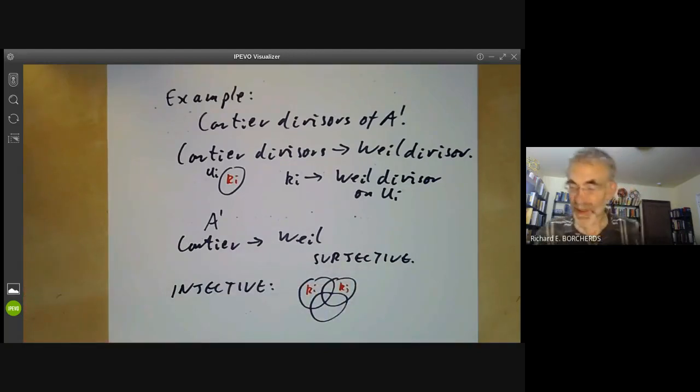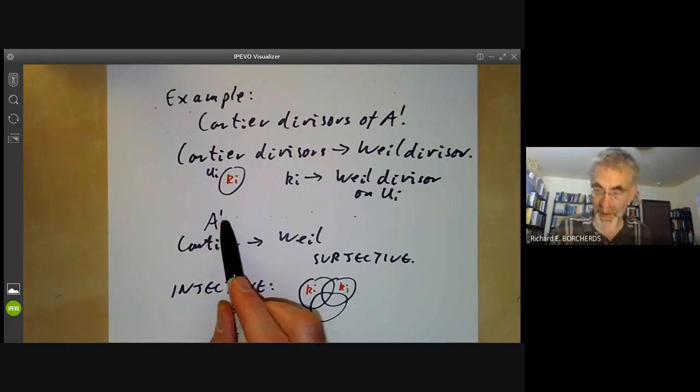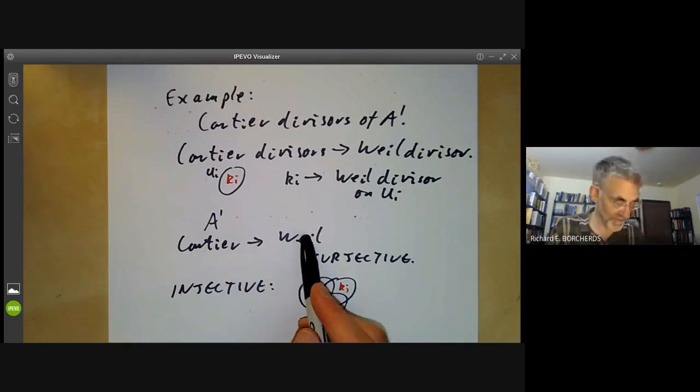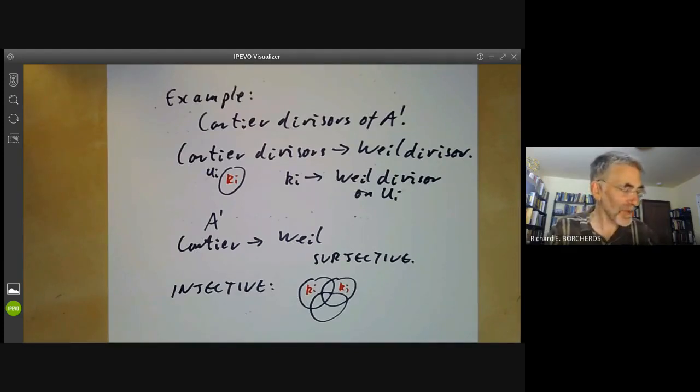So the Cartier divisor must be trivial. In other words, Cartier divisors are the same as Weil divisors in this case. You may think that this argument applies much more generally than the affine line, and you're sort of right. In many cases, Cartier divisors are the same as Weil divisors. What we'll do next lecture is give a couple of examples where the map from Cartier divisors to Weil divisors is neither injective nor surjective.